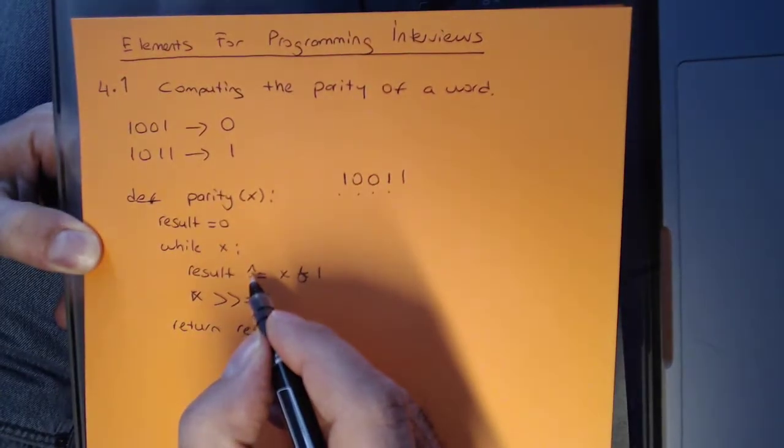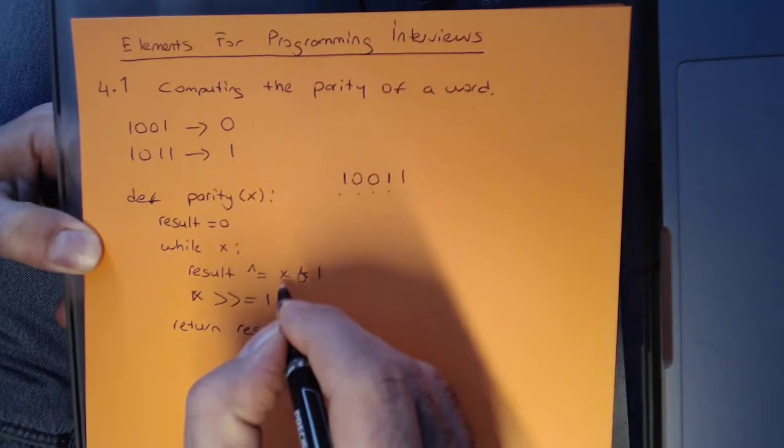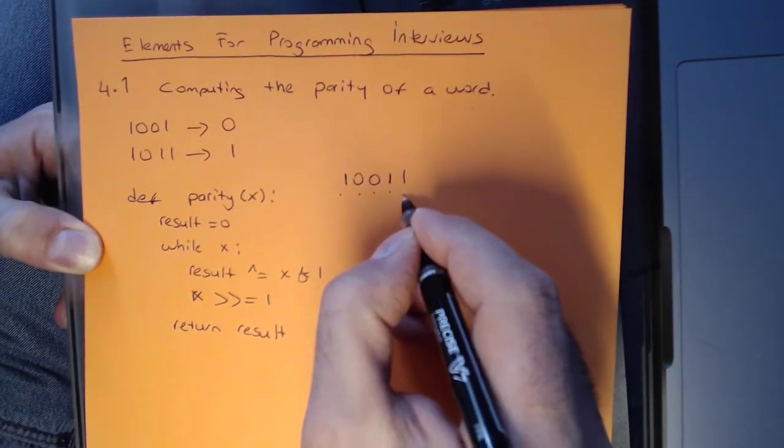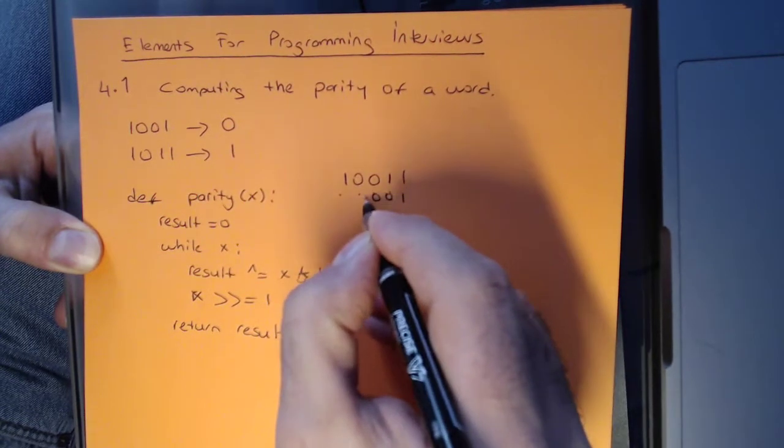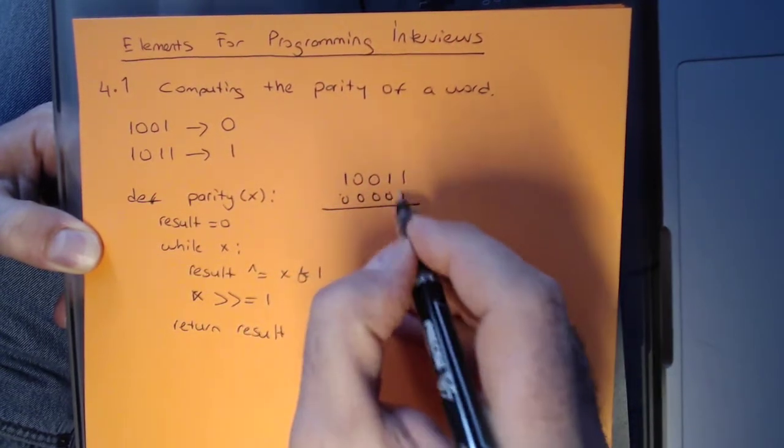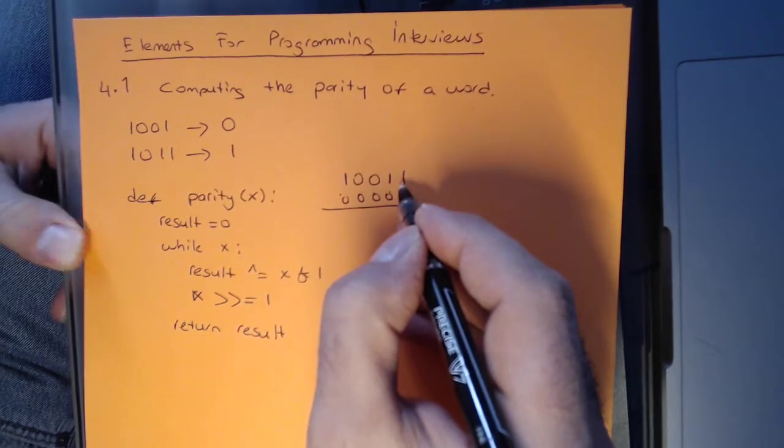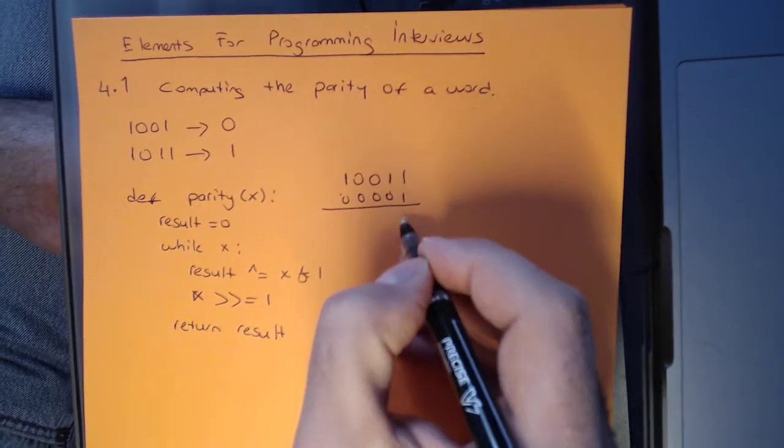So the way it works is this XOR operation. X AND 1 - what you're doing is you're taking 1 and you're ANDing it with the current number. And if the least significant bit of X is 1, it's going to return 1.